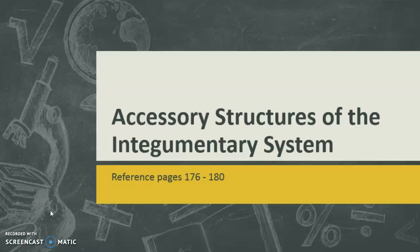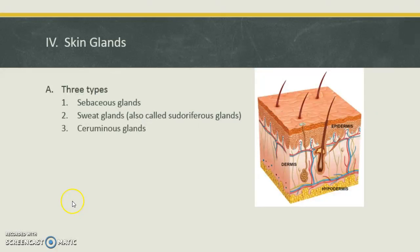Welcome to the second half of the discussion on accessory structures. In this one, we're going to be focusing on the types of glands in the skin. There are three types: sebaceous glands, sweat glands, which are also known as pseudoriferous, and ceruminous glands. All three are a little bit different, but they all appear as a dense coiled tangle of tubes deep in the dermis with a single tube that reaches the outer surface.